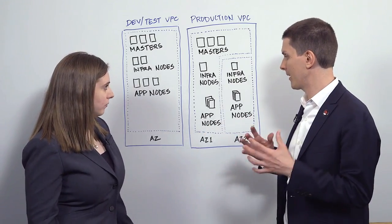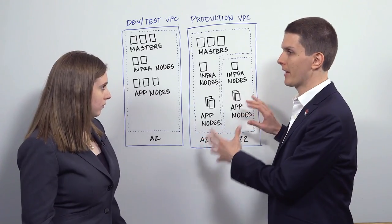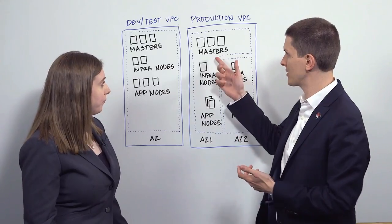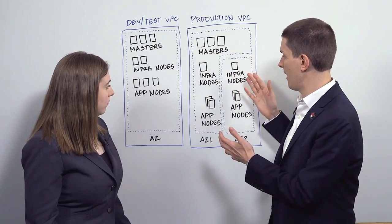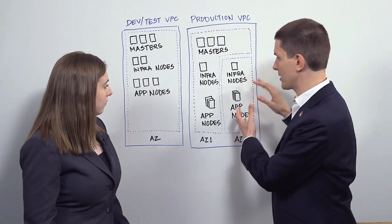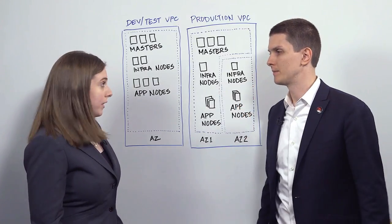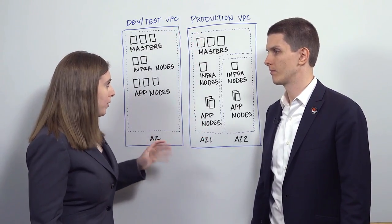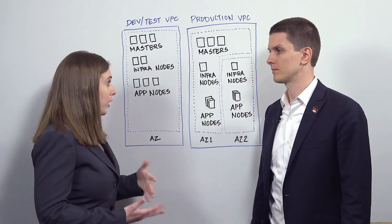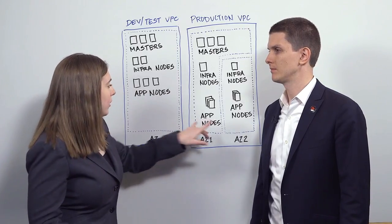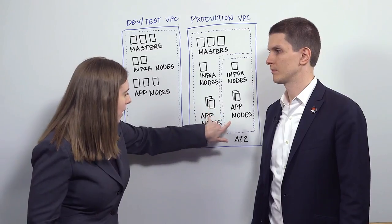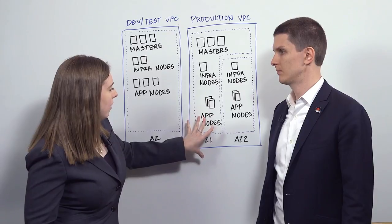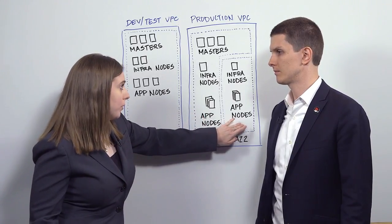If an application is deployed across both availability zones across multiple application nodes, you can lose a zone and the application will stay up and running. But all the masters are in one zone for latency reasons — does that mean if you lose zone one, the application stops running even though it's deployed in both zones? No. If you lose the zone with all your masters, you will lose some OpenShift functions — for example, you won't be able to deploy a new application. But as long as your current applications are running across application nodes in both zones, even if zone one goes down, your application will still be up because zone two is up.